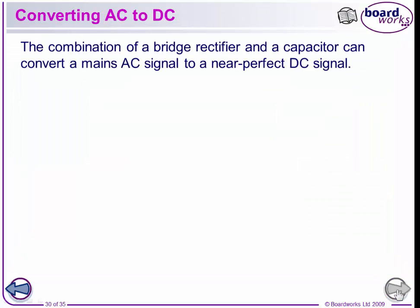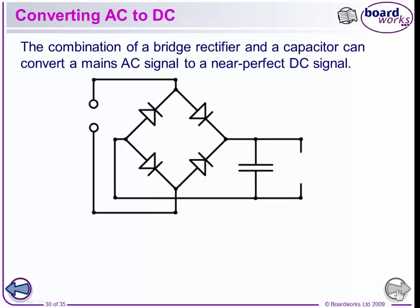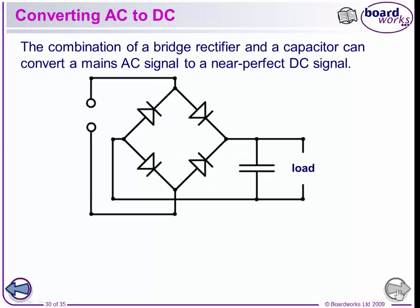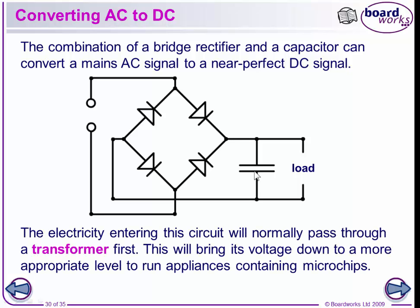The combination of a bridge rectifier and a capacitor can convert an AC signal to a near-perfect DC signal. This is the same full rectified circuit as before, with a load, but we have a capacitor here. The electricity entering the circuit will normally pass through a transformer first, which will bring its voltage down to a more appropriate level to be able to run microchips.